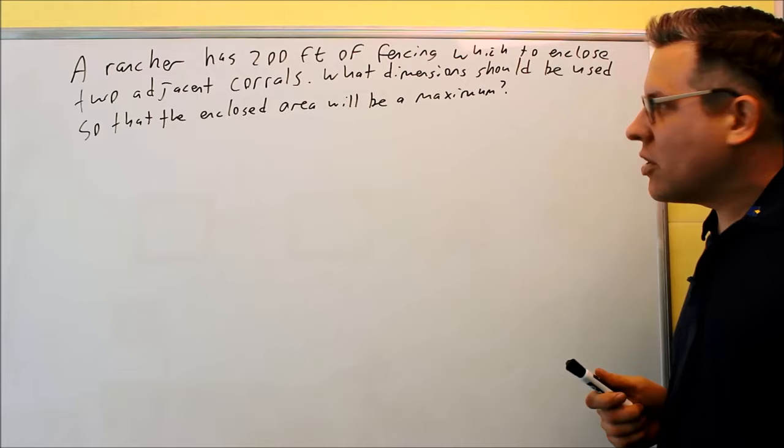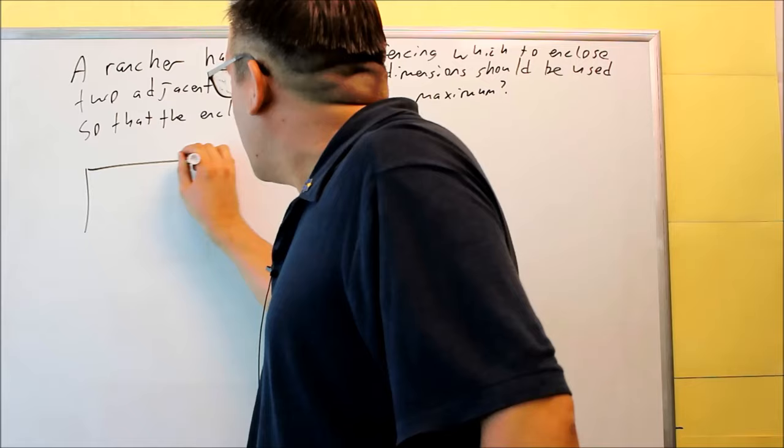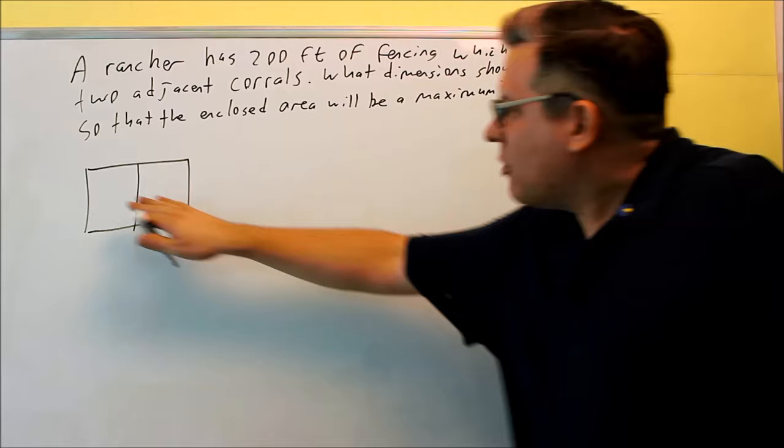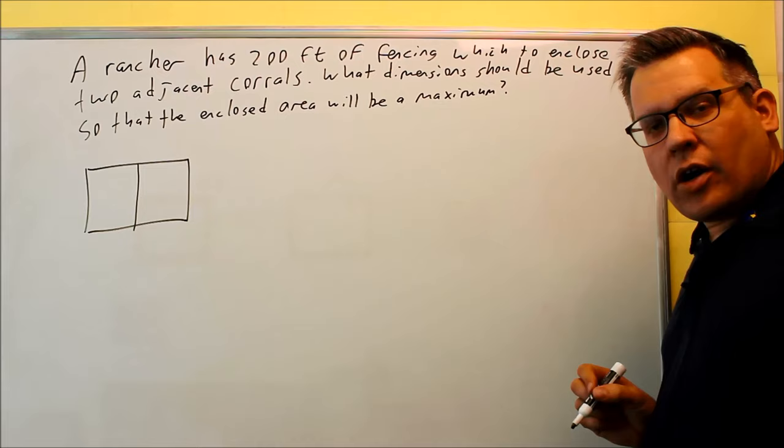A rancher has 200 feet of fencing to enclose two adjacent corrals. They may or may not provide a picture for you here. This is what the picture will look like. Adjacent means there's two corrals right next to each other. What dimension should we use so that the enclosed area will be a maximum?